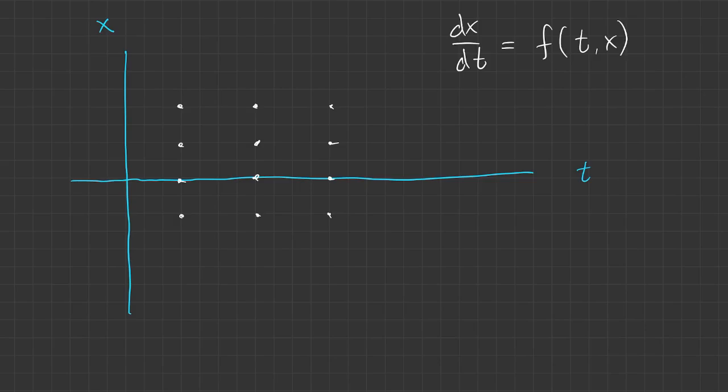Everywhere we're given the slope dx/dt. So if we evaluate f at one of these points, we get a slope that we can use to draw an arrow. That arrow is tangent to the solution curve that passes through that point.